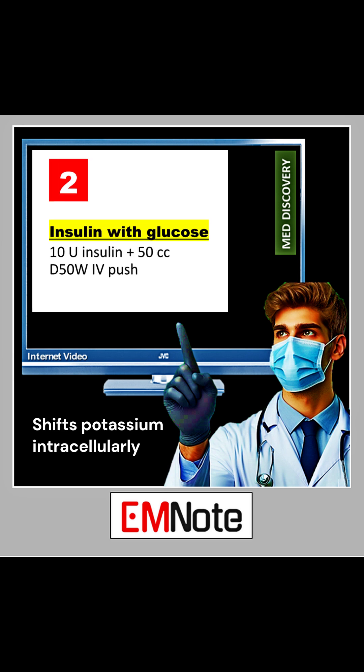10 units of regular insulin plus 50 milliliters of 50% dextrose intravenously. This shifts potassium intracellularly.